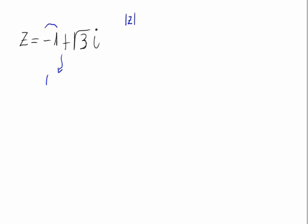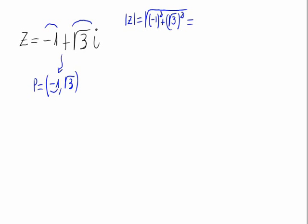Let's have a look at the complex number as it represents a point, and that point is (-1, √3). The modulus of this complex number is the same as the distance of this point — let's call it point P — so the modulus would be the square root of the x-coordinate squared plus the y-coordinate squared: √((-1)² + (√3)²) = √(1 + 3) = √4 = 2. This is the modulus of the complex number.